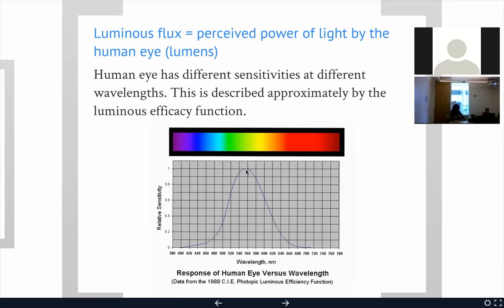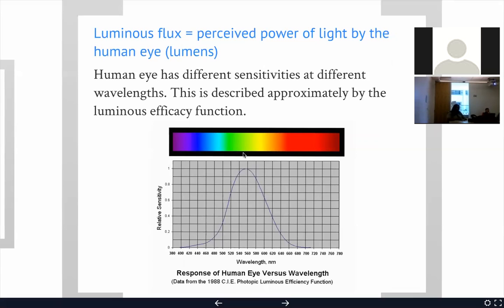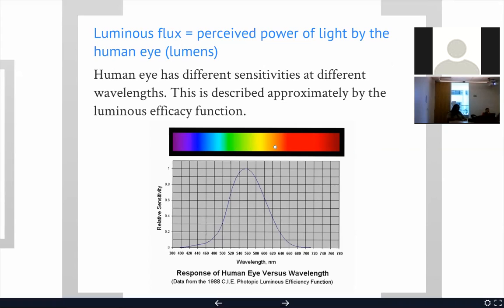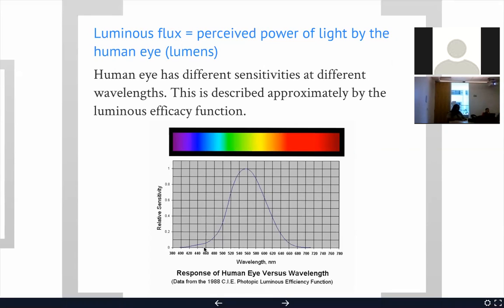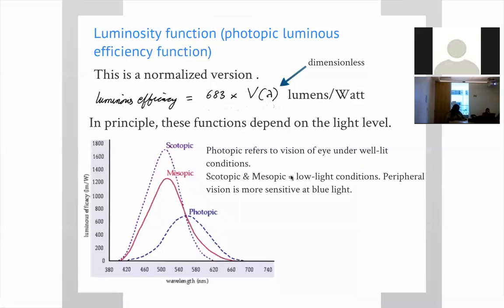Our eyes are most sensitive at around 555 nanometers, and there's a clear reason: this is the peak of solar radiation, as we saw in a previous lecture. The sensitivity falls off on both sides. When designing a lighting system for a room, for example, we need to account for this eye response — which is why we weight the power at different wavelengths based on this response when defining photometric quantities.